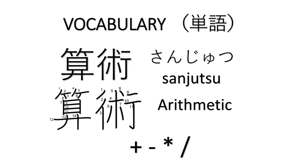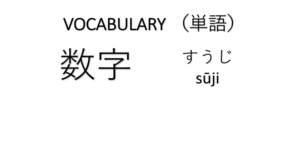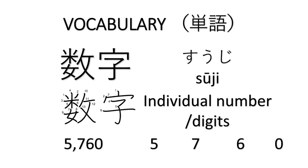Arithmetic concerns itself with the processes of addition, subtraction, multiplication and division. It is one of the branches of mathematics. Suji means digits or the individual number. For example, in this number 5760, we have four digits: five, seven, six, zero. So it is called suji.